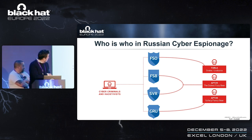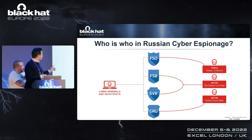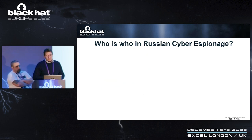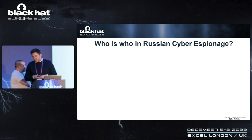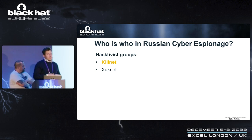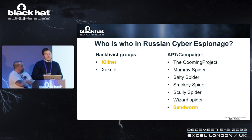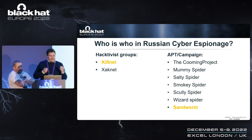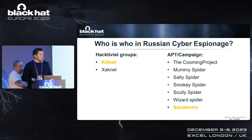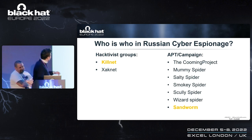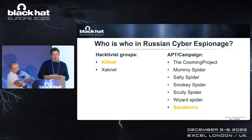On the other side there are cyber criminals and activists. There is a tiny connection between these groups and the secret services — we don't say they manage them, but maybe they share knowledge. We tried to choose two different groups with two different maturity levels. First, hacktivist groups like KillNet and HackNet. On the other end of the maturity spectrum: APT and campaign groups — Conti Project, Mummy Spider, Salty Spider, Smoky Spider, Scully Spider, Wizard Spider, and Sandworm. Sandworm and KillNet are very important for our research.